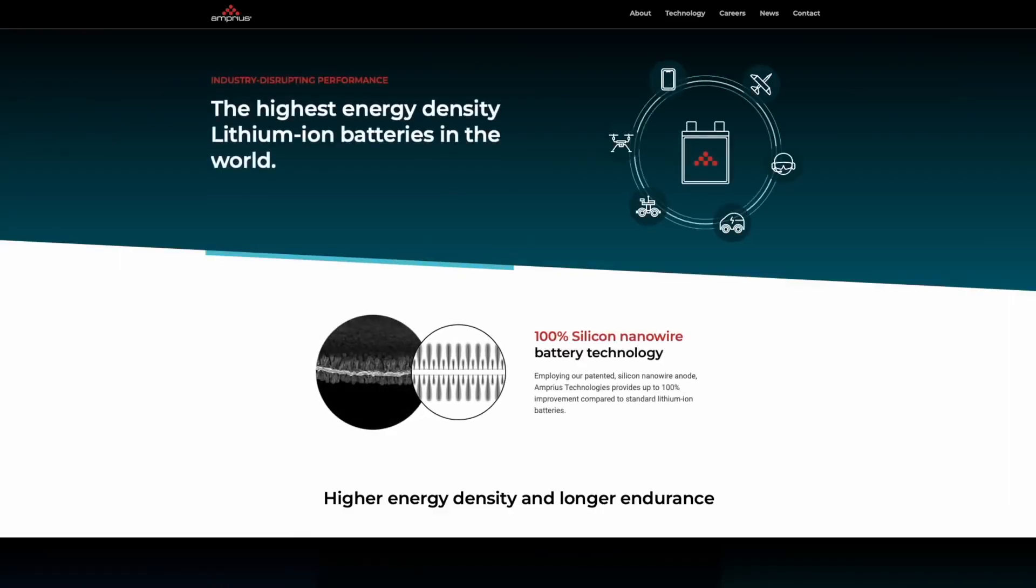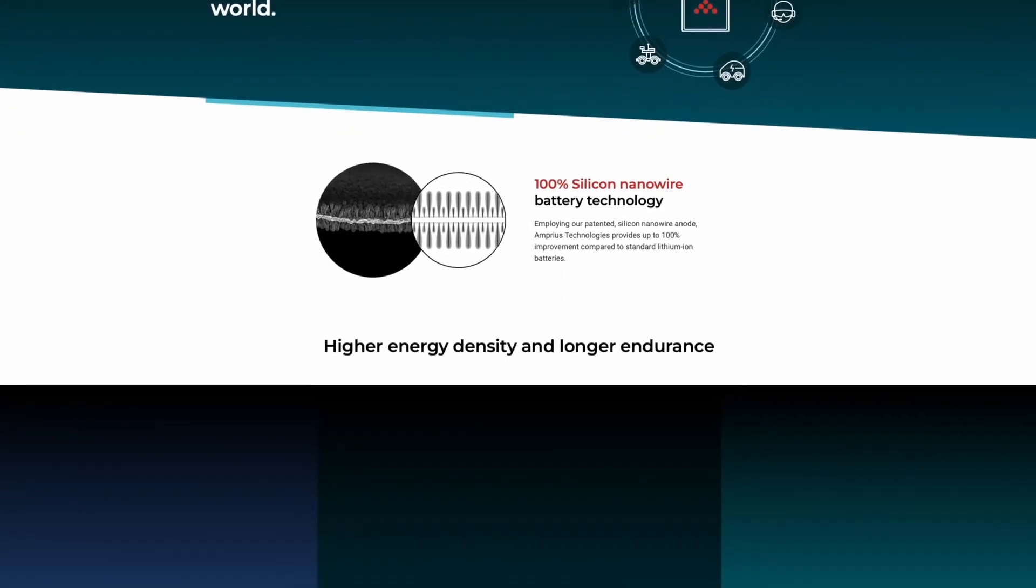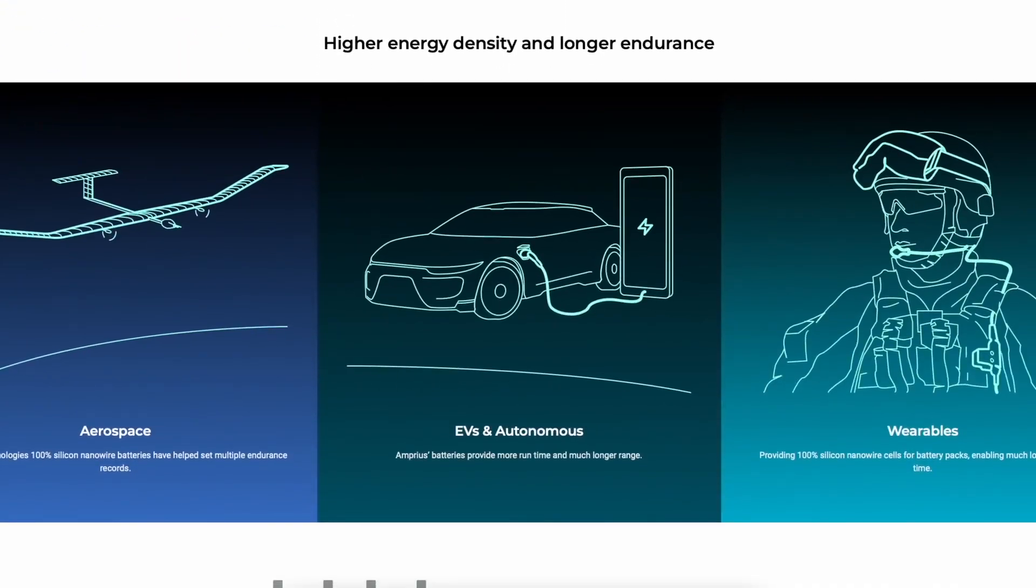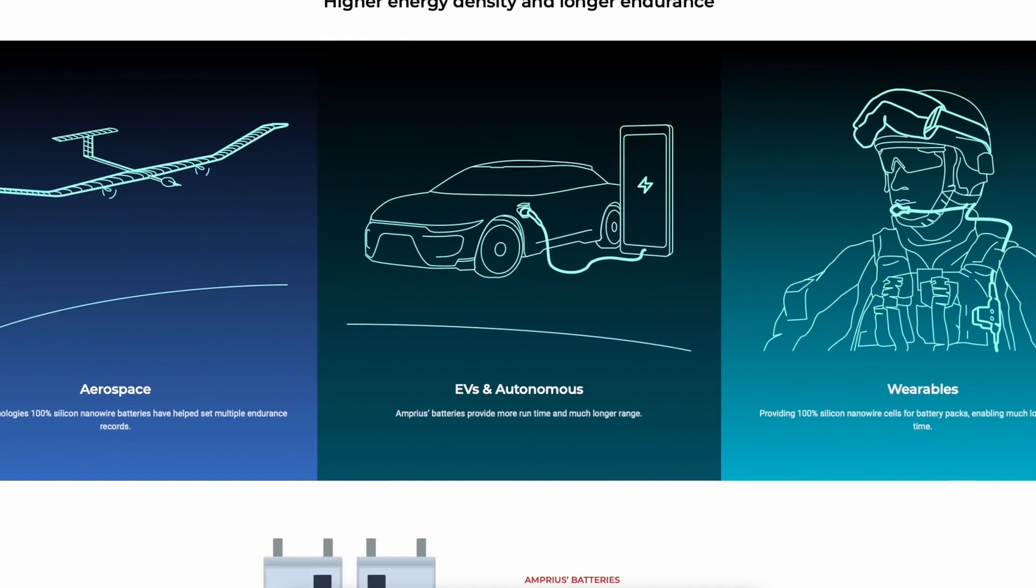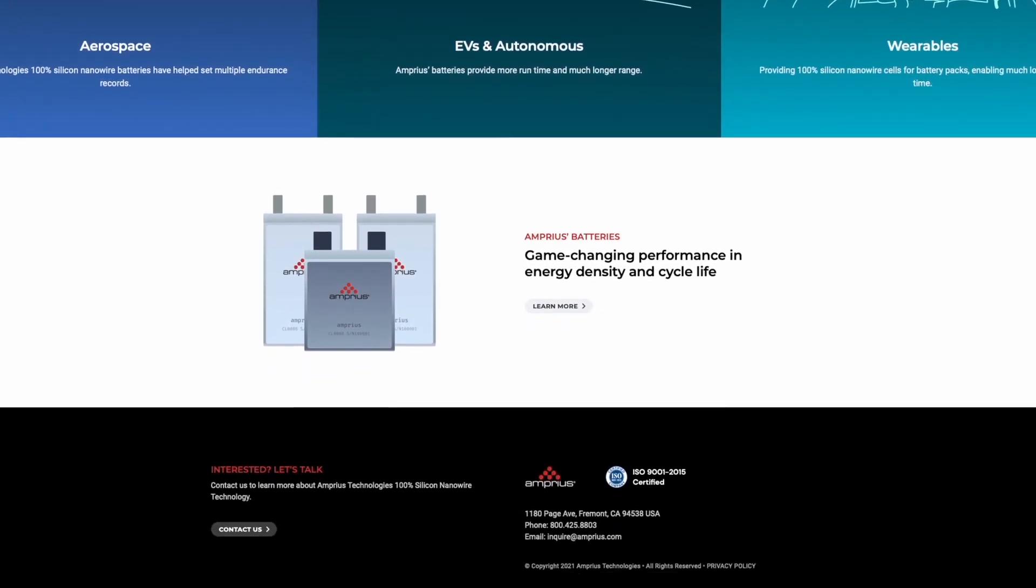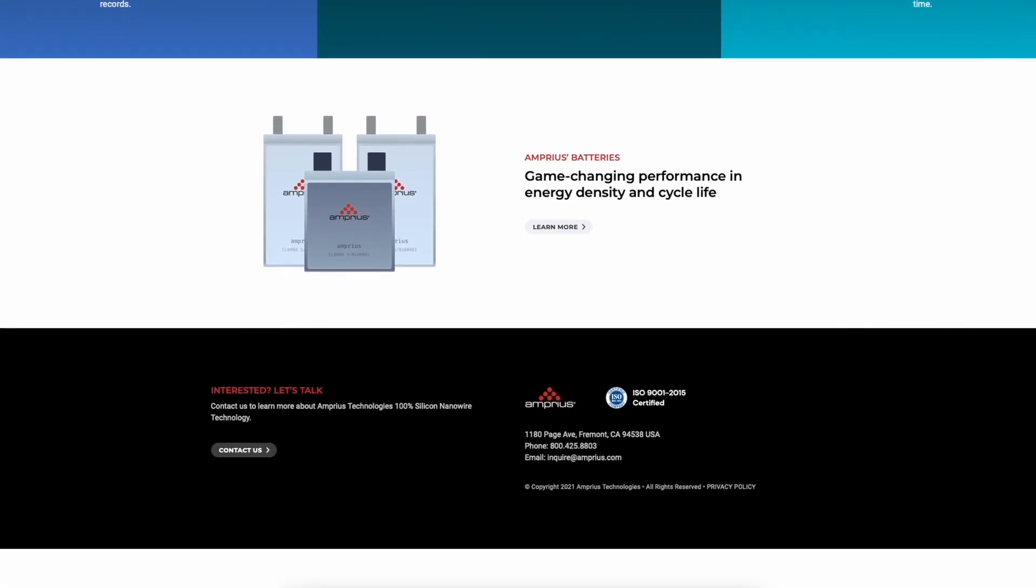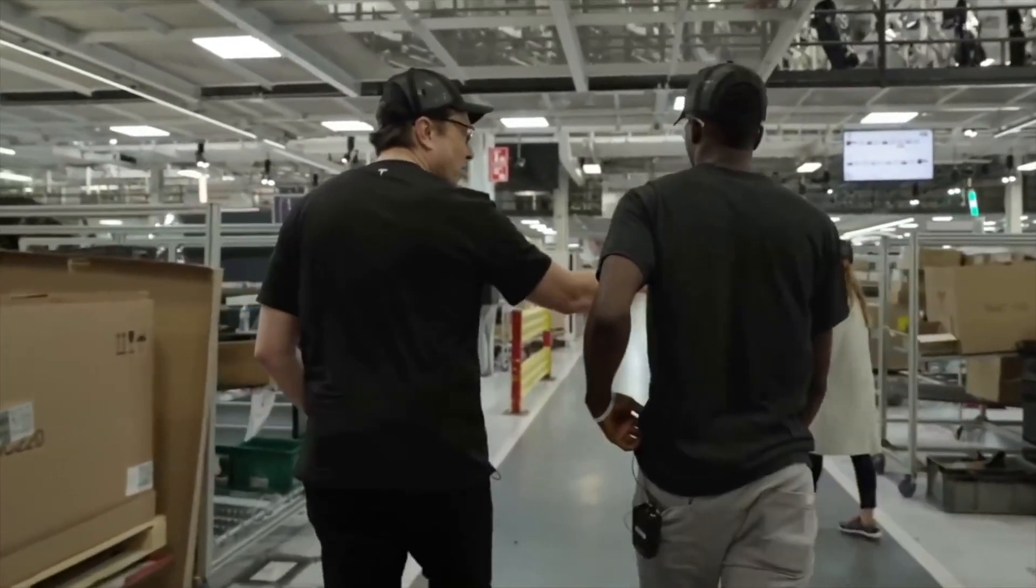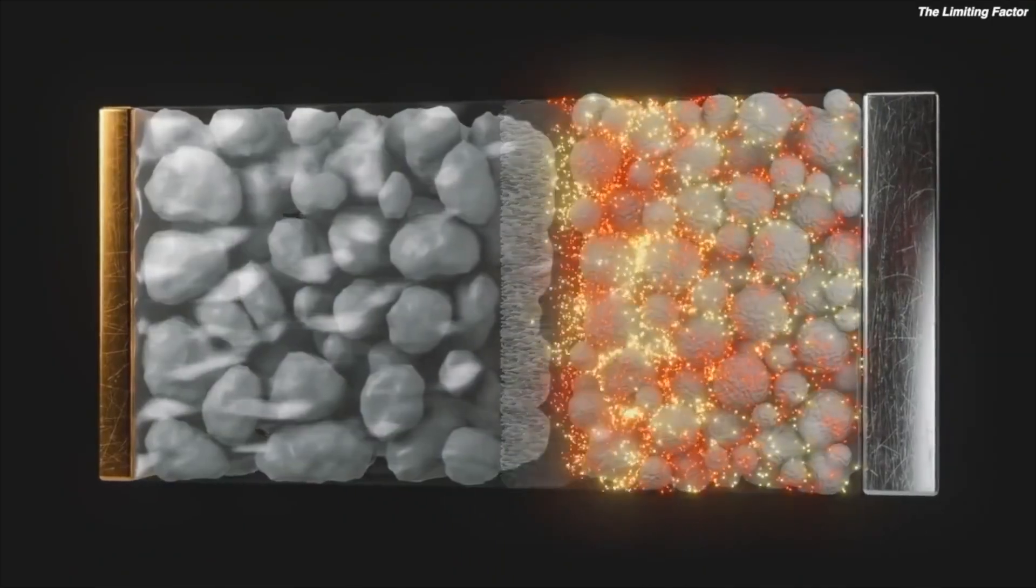Giga Shanghai has started ramping production even more. The latest video of Tesla China's factory revealed parking lots filled to the brim with vehicles ready for delivery. Both Fremont and Giga Shanghai seem prepared to dominate Q4 2021, ending the year off stronger than ever for Tesla.